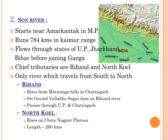Son river is the only river which travels from south to north. Rihand is a tributary of Son river; it rises from Matiranga Hills in Chhattisgarh, and the Gobind Ballabh Pant Sagar Dam was constructed on it. Rihand passes through Uttar Pradesh and Chhattisgarh. The second tributary of Son river is North Koyal, which rises on the Chhotanagpur Plateau with a total length of 260 kilometers, and meanders through the northern part of Betla National Park.